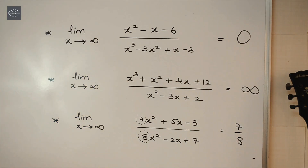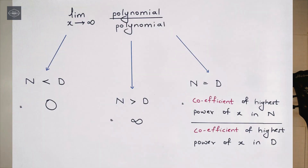And that's all for this. Once again, let me flash the three cases on the screen. You can pause the video and note them down. Just remember: whenever we are dealing with limit x tends to infinity — if degree of numerator is less than degree of denominator, answer is 0; if greater, answer is infinity; and if equal, the answer is the coefficient of the highest power of x in the numerator upon the coefficient of the highest power of x in the denominator.